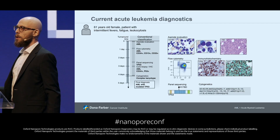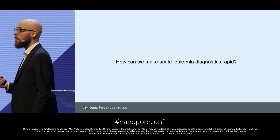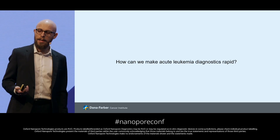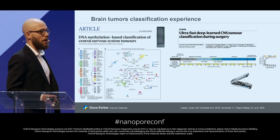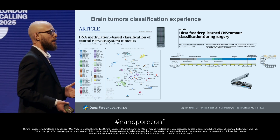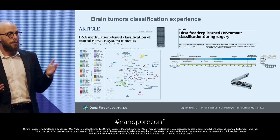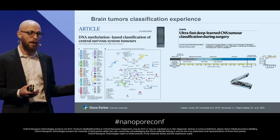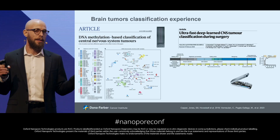So the main question behind the project was: how can we make acute leukemia diagnostics rapid? To answer this question, we went back to the brain tumor experience, where my PI, Volker Ovestad, and other colleagues some years ago showed that doing a DNA methylation profile of brain tumors — at that time using Illumina array technology — it is possible to distinguish between the different tumor entities.